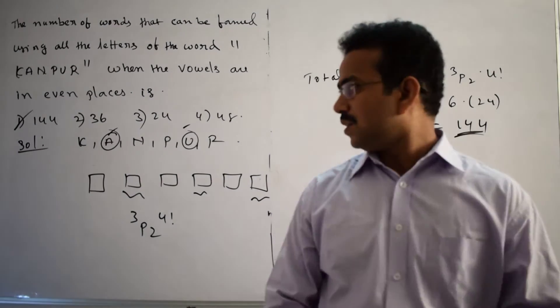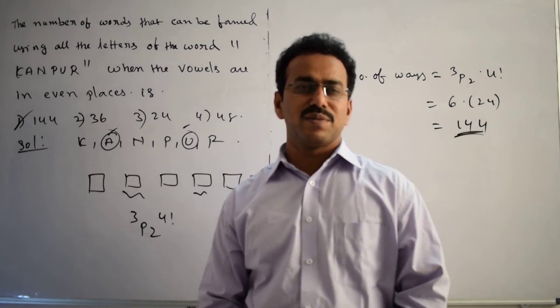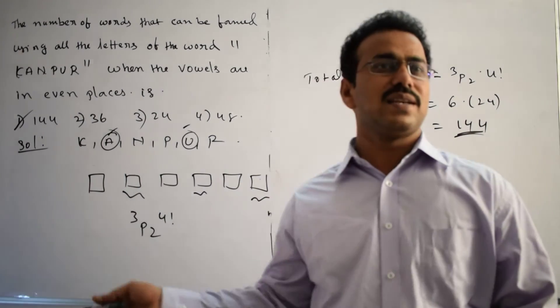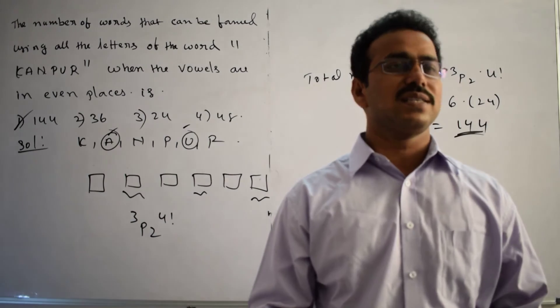So what is the logic we applied here? Simply we took 6 boxes and we identified even boxes. And in the even boxes we filled with vowels, and then we filled with rest of the available letters, 4 letters are available.